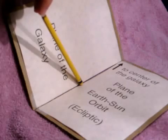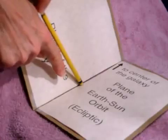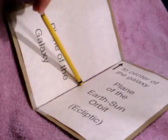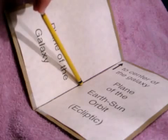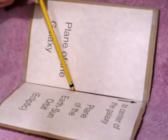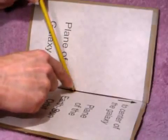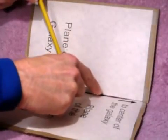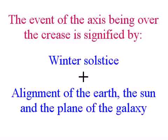Let's take a closer look at the axis while it is directly over the crease. As the axis is slowly moving through this position, the winter solstice will occur, and this means that the axis is also pointing away from the Sun as much as possible, since this is what makes the winter solstice. This means that on this day, the Sun is also on the crease, and that you can draw a line from the Earth along the crease to the Sun, and then further out to the plane of the galaxy. So now we see that the event of the axis being over the crease is signified by the simultaneous occurrence of the winter solstice and the alignment of the Earth, the Sun, and the plane of the galaxy. Both of these events are very well known to astronomers, since they each happen once a year, but they happen together only once every 26,000 years.